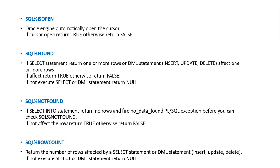Why does SQL%ISOPEN always return false? When we execute some DML statement like a SELECT or UPDATE, as soon as the DML statement is executed, SQL%ISOPEN returns false. In the fraction of a moment during execution, SQL%ISOPEN may return true, but you cannot check this attribute during that moment. After execution, when you check SQL%ISOPEN, it always returns false. The next attribute is SQL%FOUND.